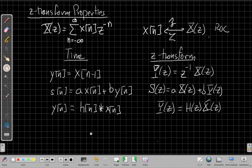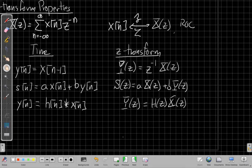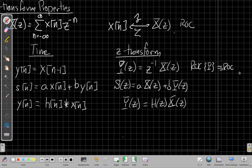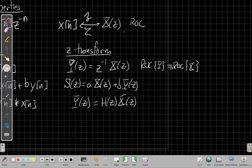And then to be complete, we should talk about regions of convergence. So in this case, the ROC of Y equals the ROC of X, except possibly adding or subtracting the origin or infinity. We're putting another, by multiplying by z^(-1), we're putting another pole at the origin.